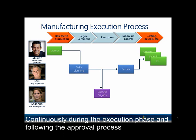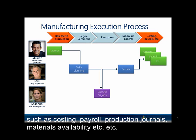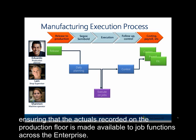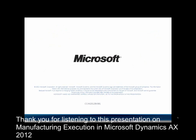Continuously during the execution phase and following the approval process, data will flow from Manufacturing Execution into related areas such as costing, payroll, production journals, materials availability, etc. Ensuring that the actuals recorded on the production floor are made available to job functions across the enterprise. Thank you for listening to this presentation on Manufacturing Execution in Microsoft Dynamics AX 2012.